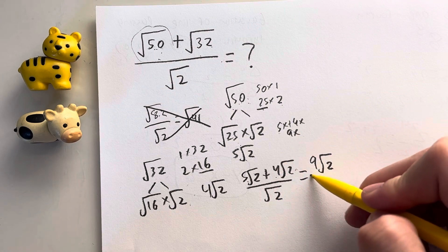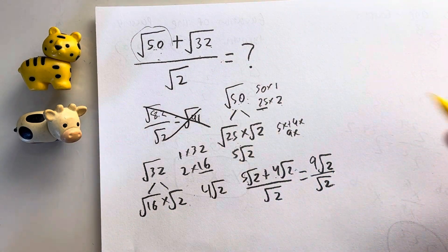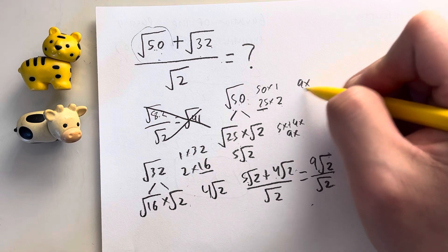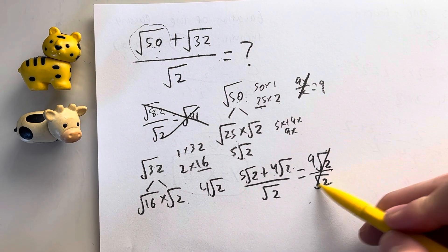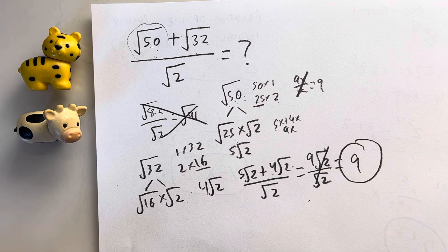And that's all being divided by root 2. So in this case, I could just divide out the root 2s because if I have 9x divided by x, it would just cancel out, give me 9. So in this case, I could divide the root 2s. That finally leaves me with my answer of 9 for this question.